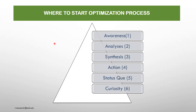Where to start the optimization process? The six layers are: awareness, analysis, synthesis, action, status quo, and curiosity. These six layers describe how process optimization can be executed — what type of awareness is needed, what type of analysis, synthesis, action, status quo, and curiosity — these are integrated layers that address how process optimization can be accomplished.